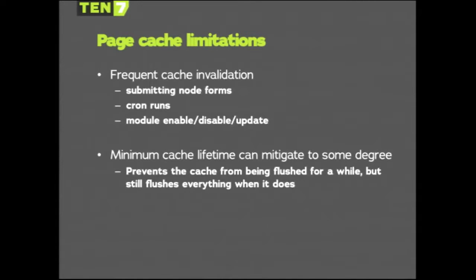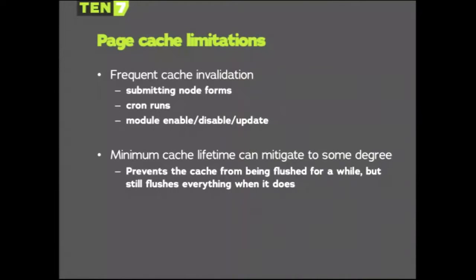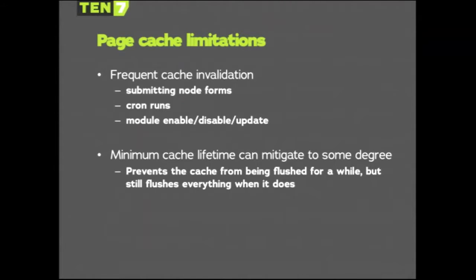In addition to being all-or-nothing, the cache invalidates really often. Any time you save or add a node, that clears the page cache and block cache. Cron runs have the same effect — the entire page cache and block cache are destroyed and rebuilt from scratch. Any time you enable, disable, or update a module, the same thing happens. So if your site adds nodes consistently — say every minute — you're going to have a lot of cache misses.